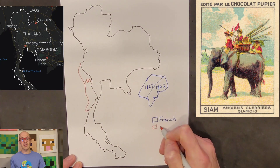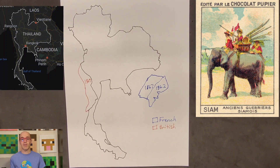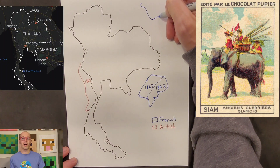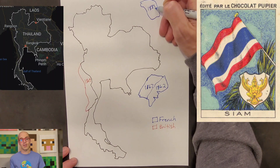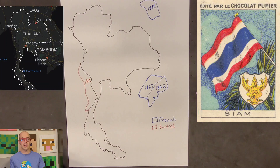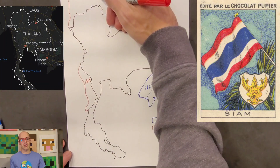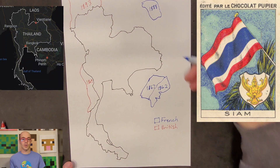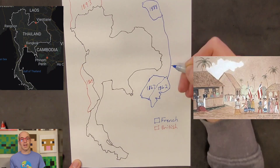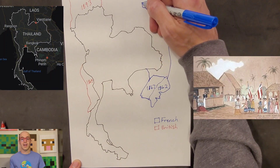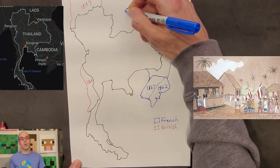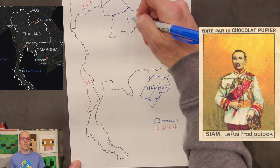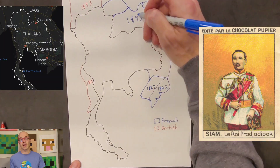During the late 19th and early 20th centuries, Thailand faced significant challenges regarding its borders. The kingdom's territories were subject to pressures from colonial powers, including Britain and France, resulting in territorial concessions through treaties and agreements. The signing of treaties such as the Anglo-Siamese Treaty of 1909 led to the cession of territories, including parts of present-day Laos and Cambodia, to French Indochina and British Burma. These border adjustments were aimed at maintaining Thailand's independence and sovereignty amidst the expansionist ambitions of neighboring colonial powers.